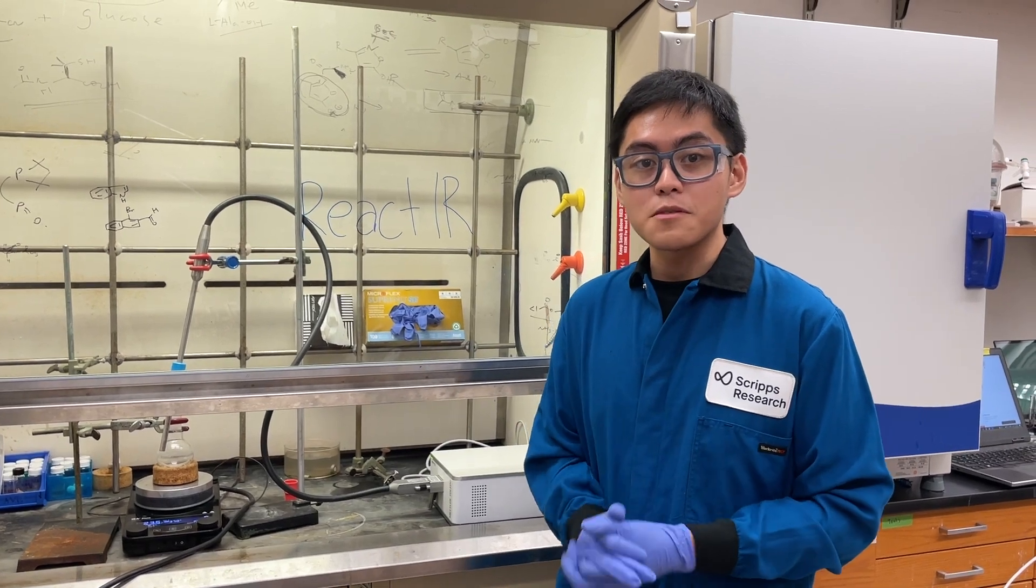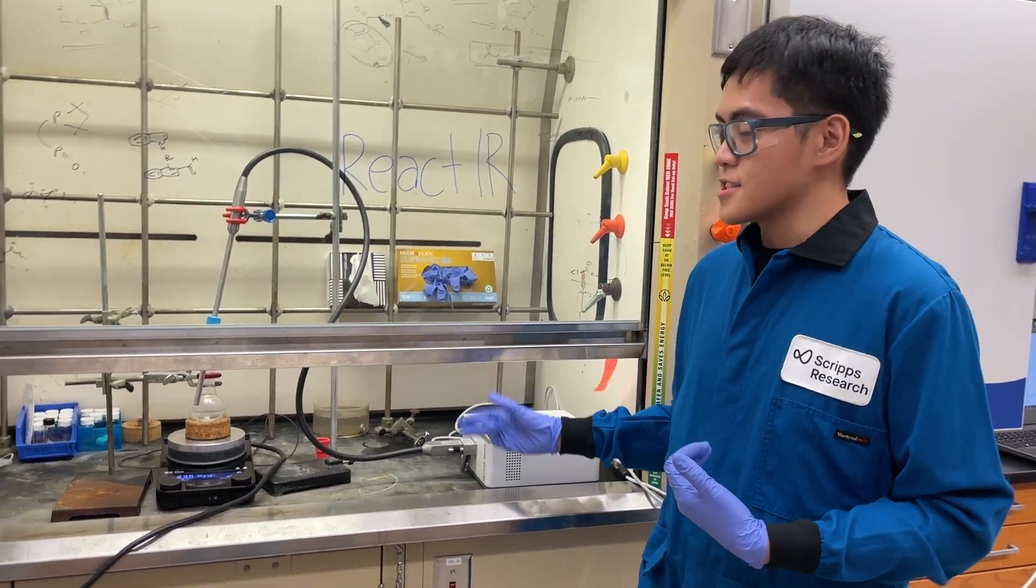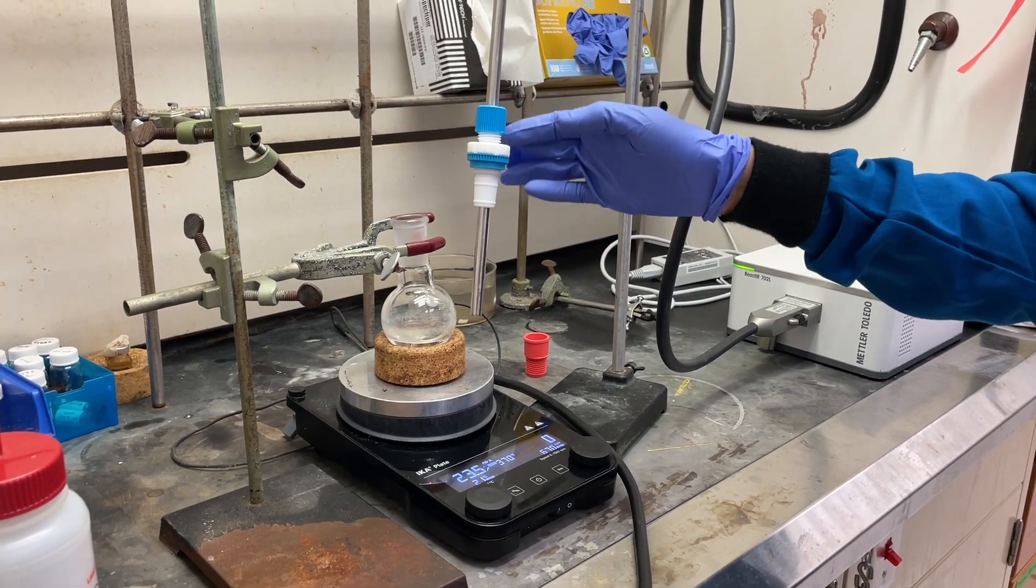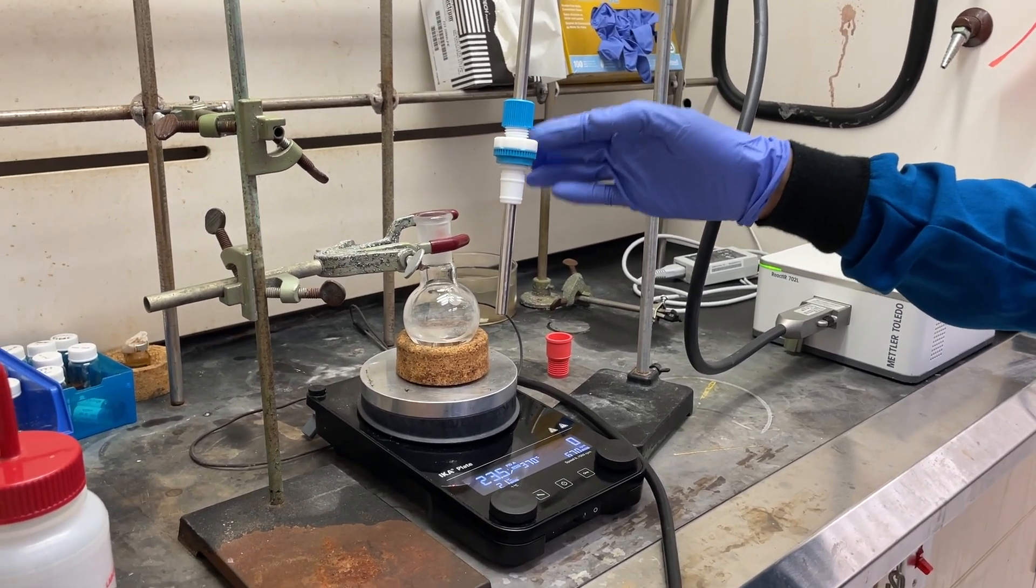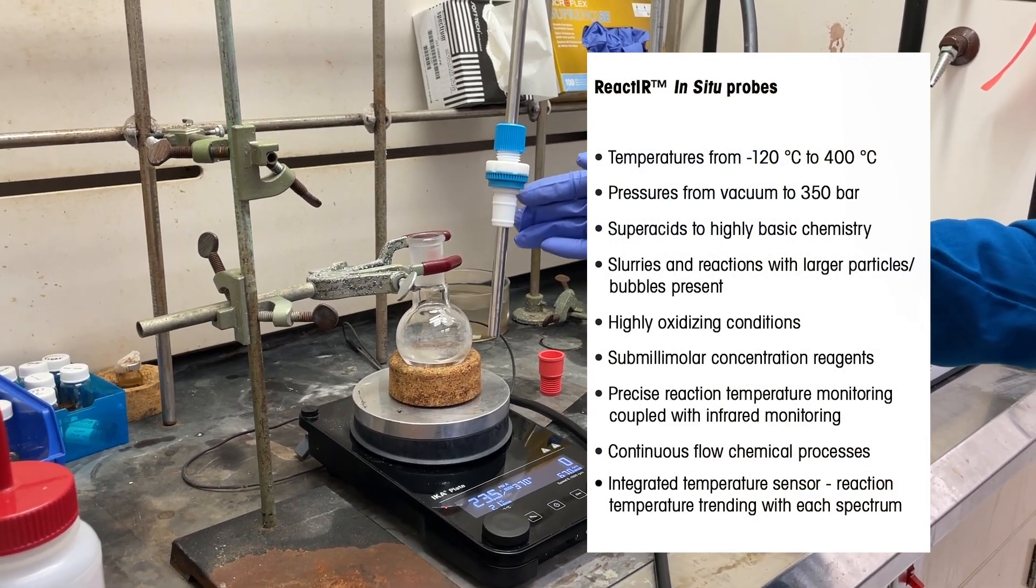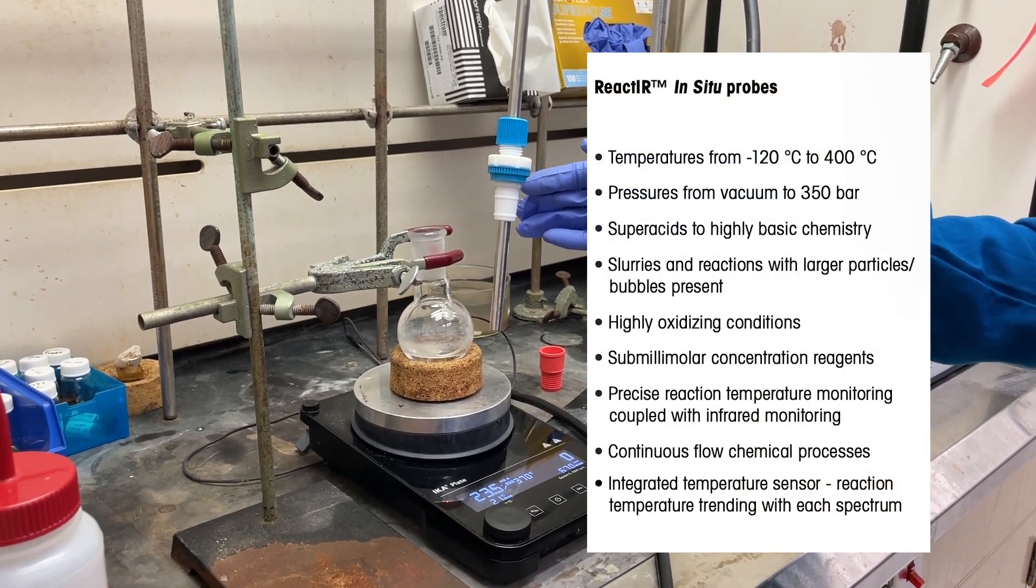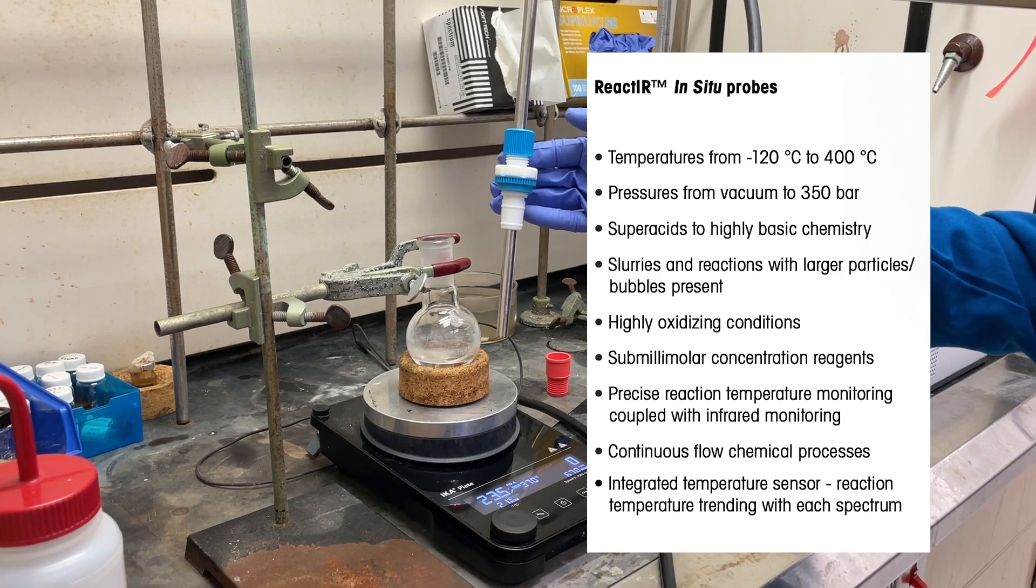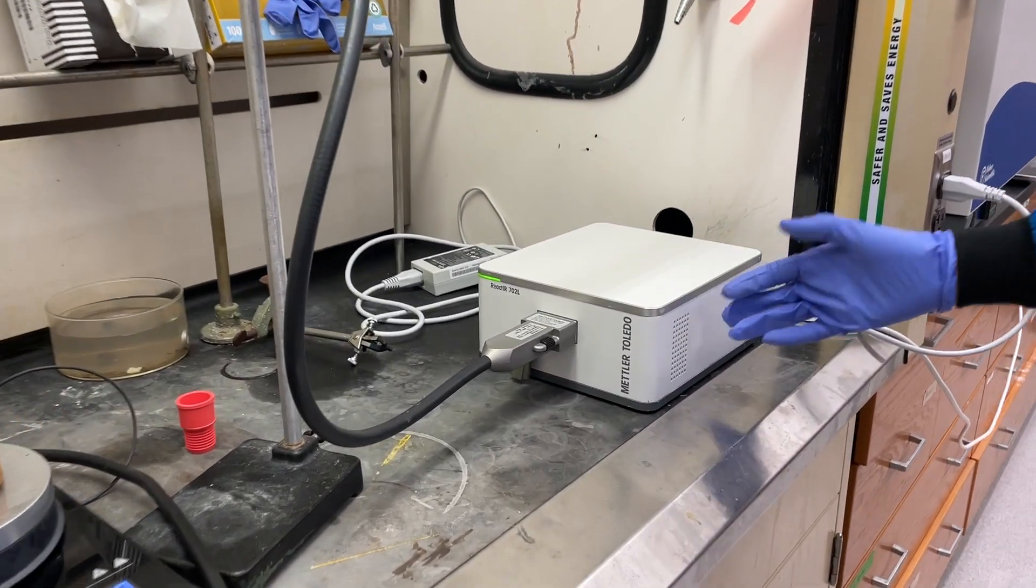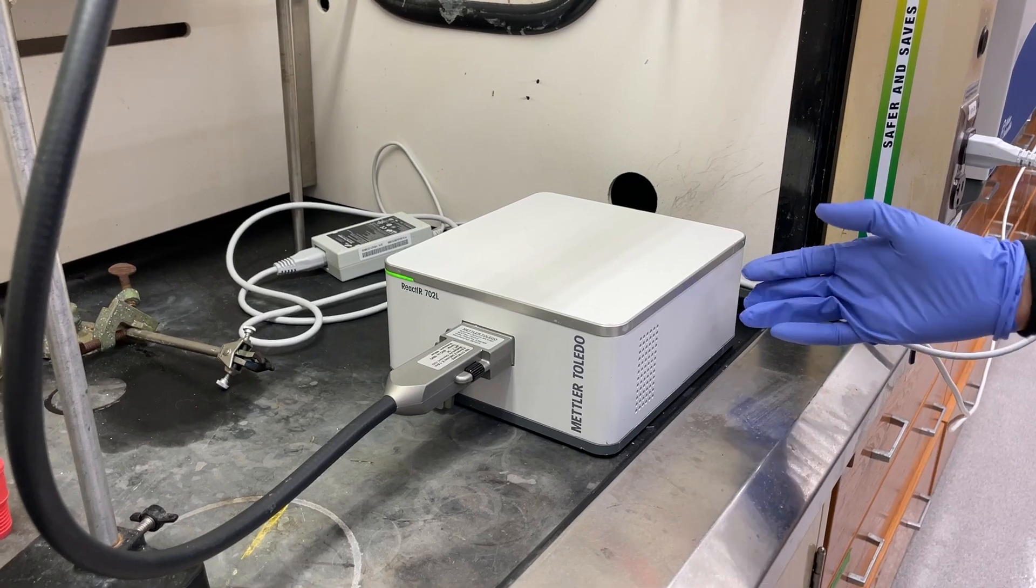So now let's go over the setup of the React-IR. First is the probe. This probe is designed to operate over a wide range of conditions: varying temperature, pressure, acidic or basic conditions, or oxidizing conditions, you name it. Just make sure to consult the manual. This probe is connected to a spectrometer that generates the infrared light that interacts with the sample through the probe.